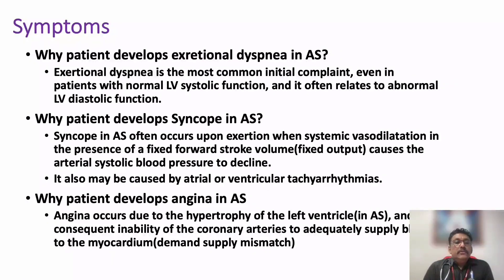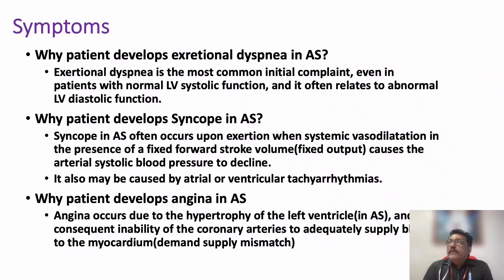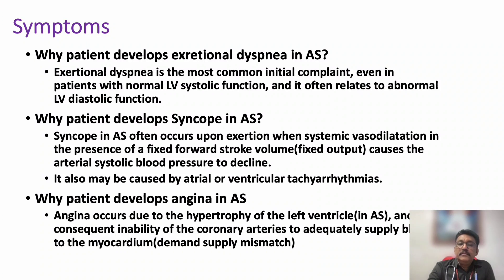Angina is due to demand-supply mismatch. When there is aortic stenosis, left ventricular hypertrophy occurs, so demand increases, but the coronary artery supply remains the same. This demand-supply mismatch produces angina. So dyspnea, syncope, and angina are the three most common findings in aortic stenosis.